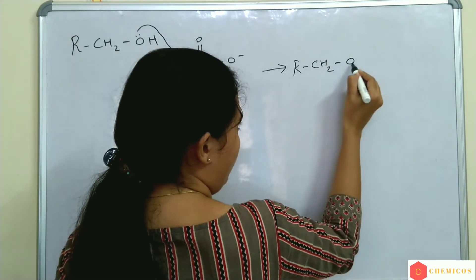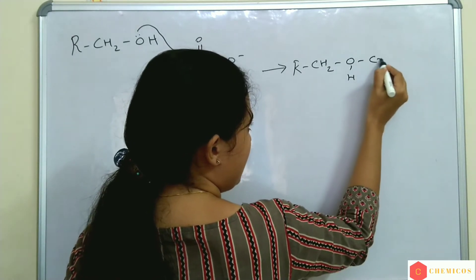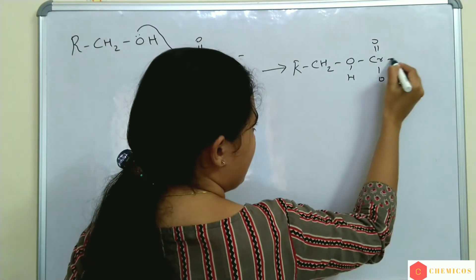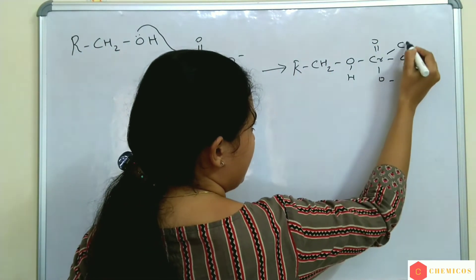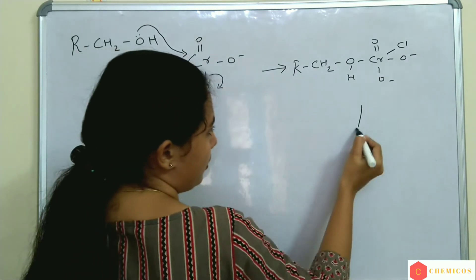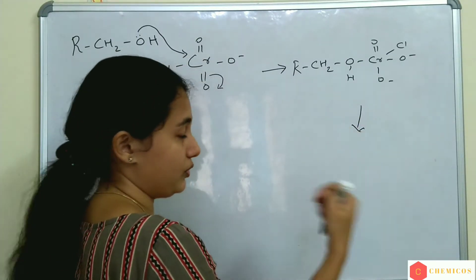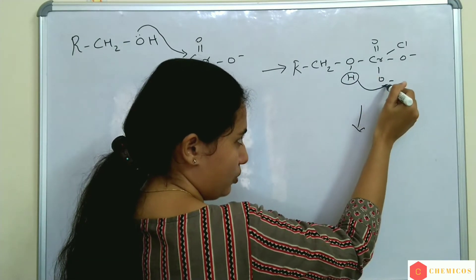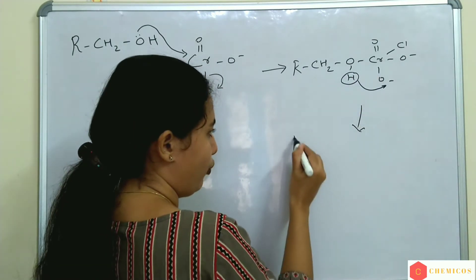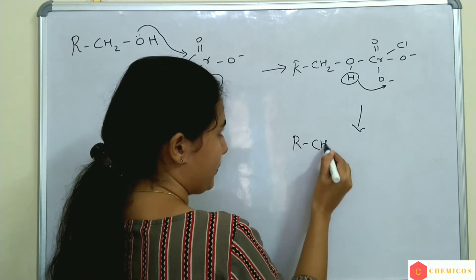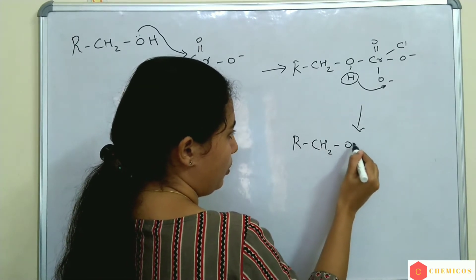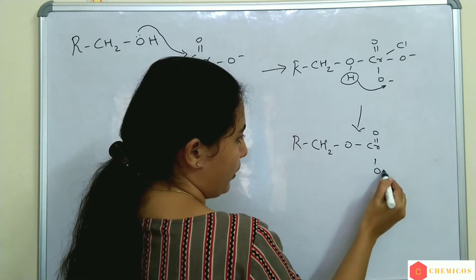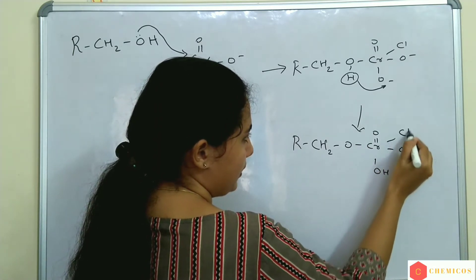We get an intermediate: R-CH₂-O connected to Cr with a double bond to O and O⁻, along with Cl. Now a proton transfer takes place — this hydrogen is shifted and an OH is formed. The intermediate is R-CH₂-O, Cr double bond O, OH, O⁻, and Cl.